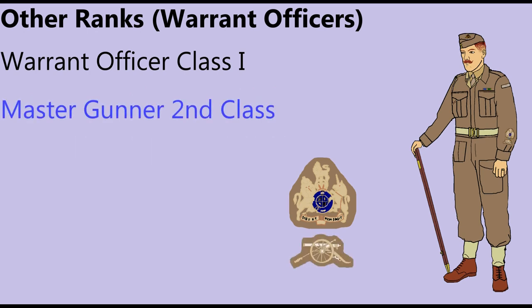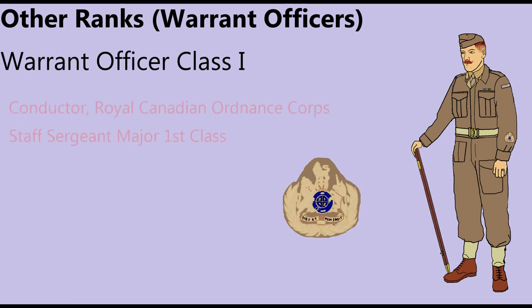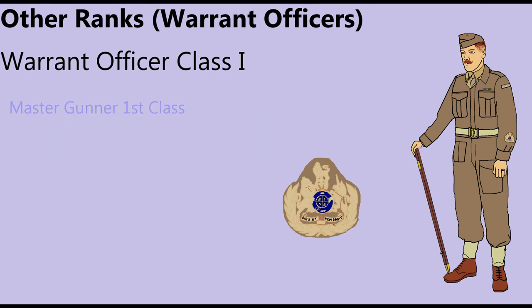A Master Gunner Second Class added a gun below the Royal Arms insignia. A Royal Arms set in a wreath was worn by a Conductor of the Royal Canadian Ordnance Corps, or a Staff Sergeant Major First Class. It was also worn by an artilleryman holding the appointment of Master Gunner First Class, with the addition of a gun badge below.